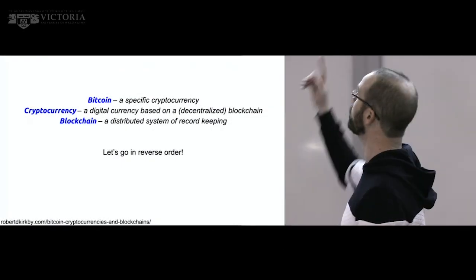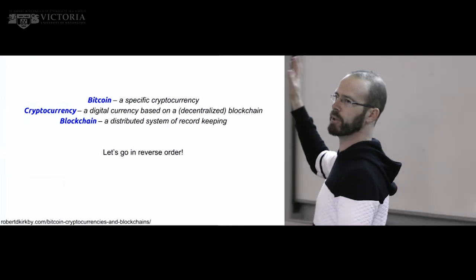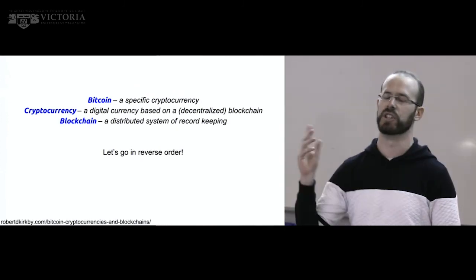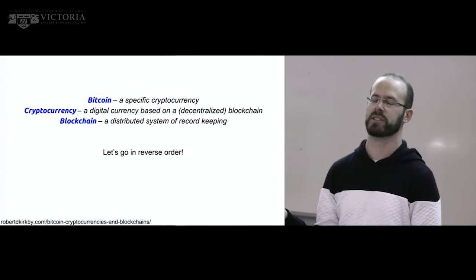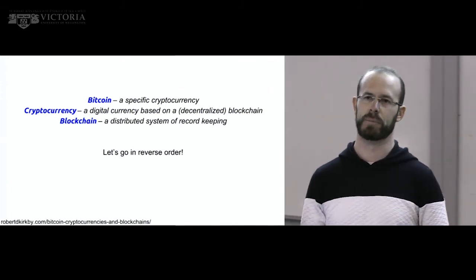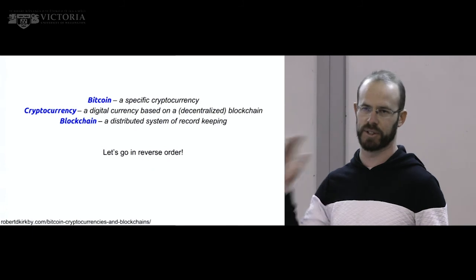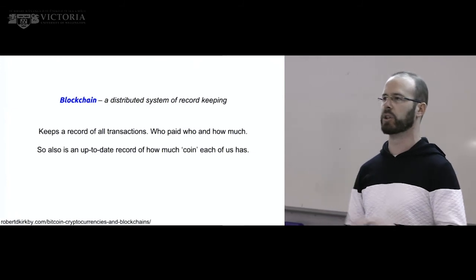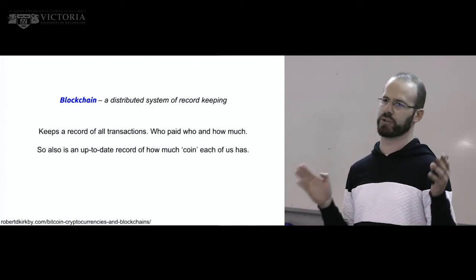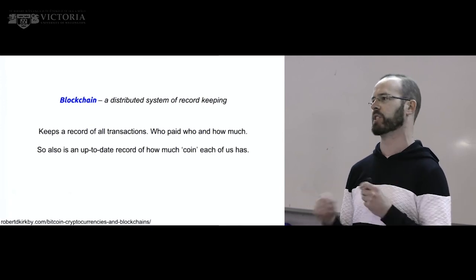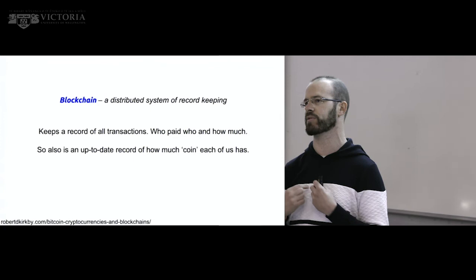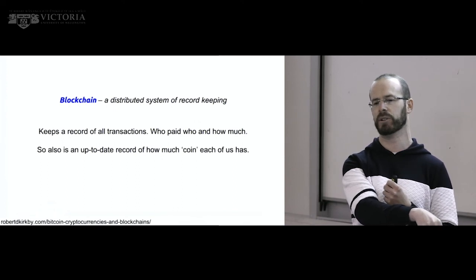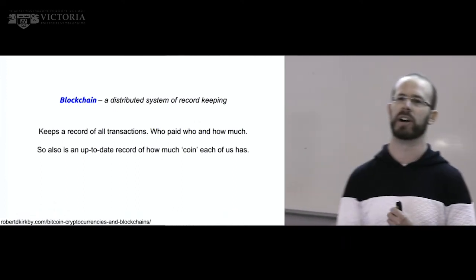Bitcoin is a specific cryptocurrency. A cryptocurrency is a digital currency based on blockchains, and a blockchain is a distributed system of record-keeping. For the purpose of cryptocurrency, a blockchain is a way to record all transactions — every time I transfer money to you or you transfer money to me, it's recorded publicly on this blockchain. Anyone can go and look at it: who paid who and how much.